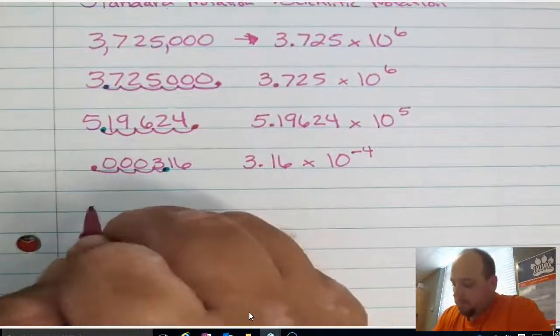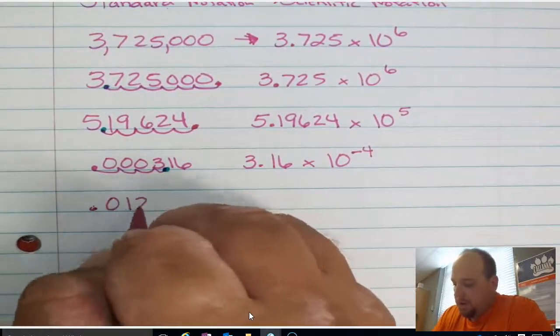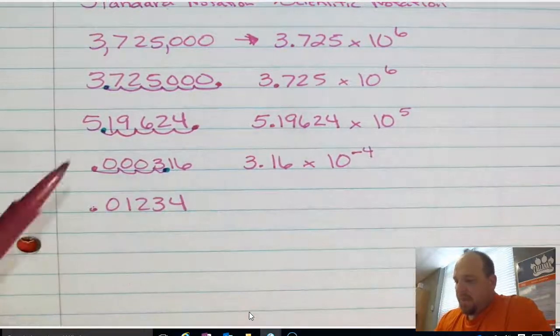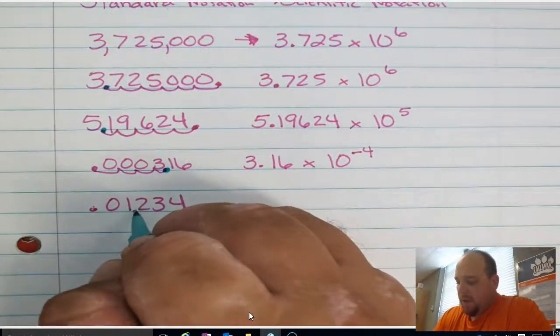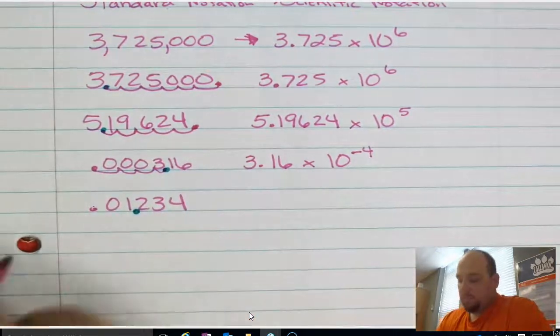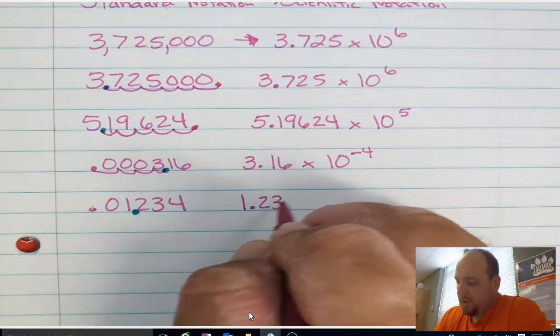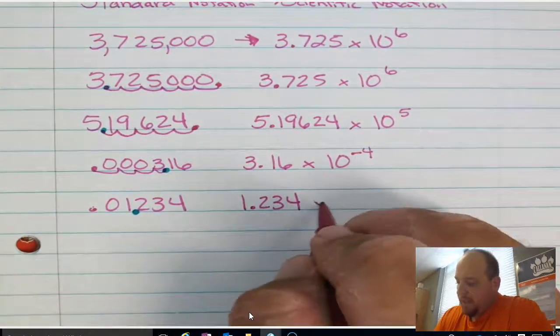One more example here. Let's go 0.01234. So where would I move the decimal so that I would have a factor between 1 and 10? That would go right here between the 1 and the 2. All right. So I'm going to rewrite that factor. 1.234. We're going to take that times 10.